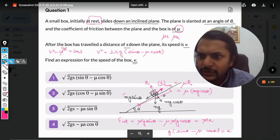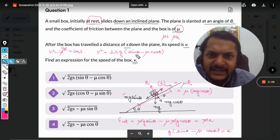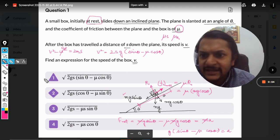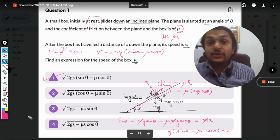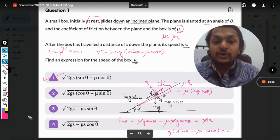g sin theta minus mu g cos theta. So it's 2gs times sin theta minus mu cos theta, and take the square root. So our first option is absolutely correct, and this is how we do it.